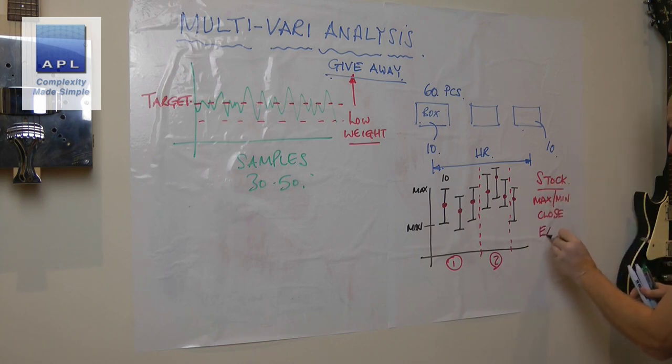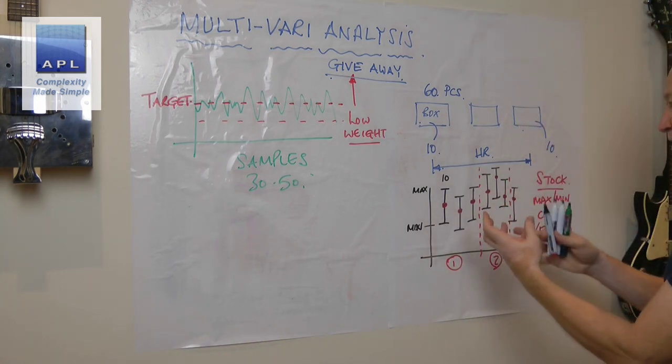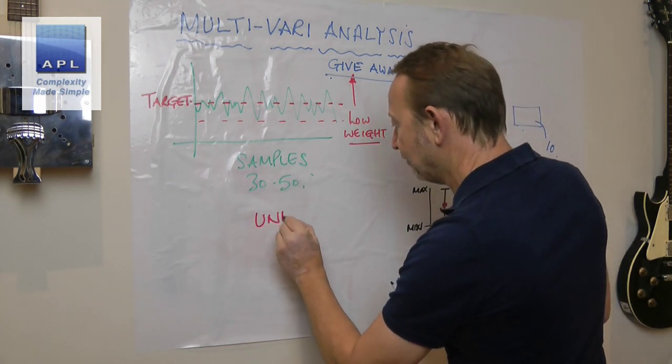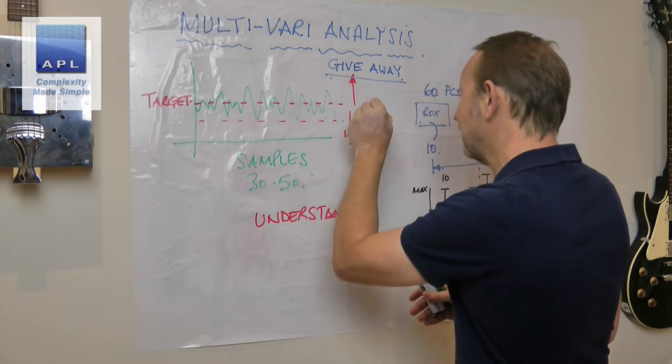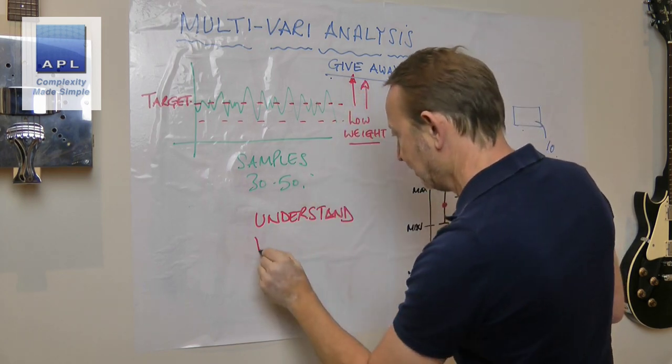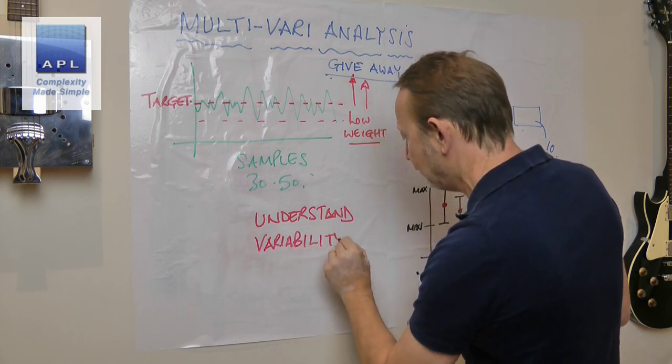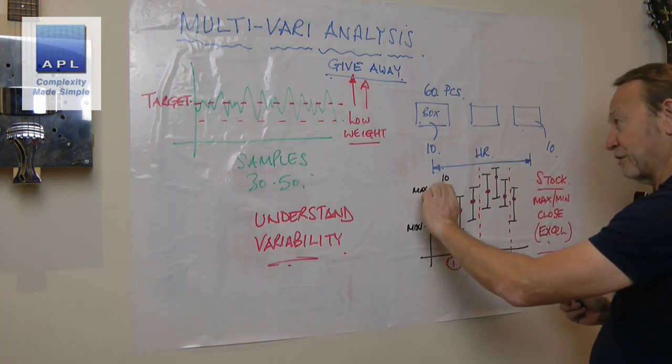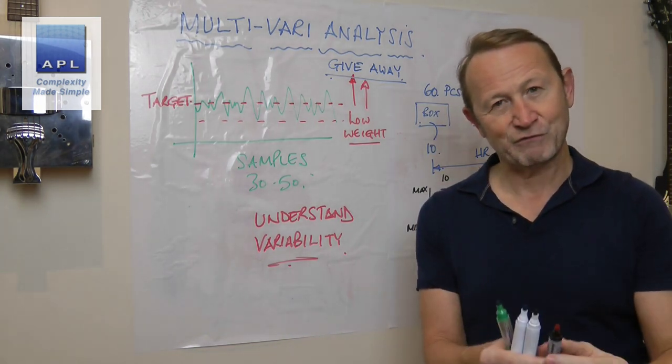You'll end up with the max, the min, and the average. So it's a stock graph that's in Excel. If you're in Minitab, there is a multivari option. Now what are we going to see by doing this? I'm going to understand the variability because it's the variability that makes us wind the process up here.